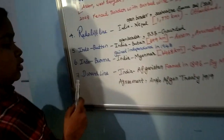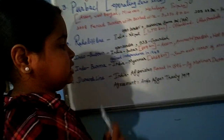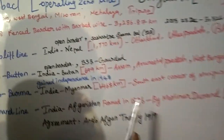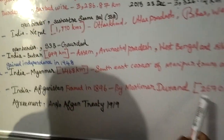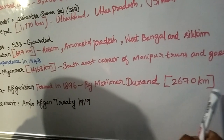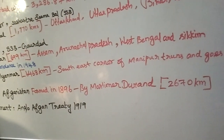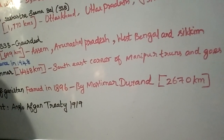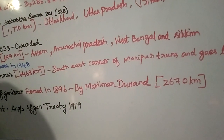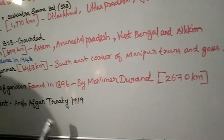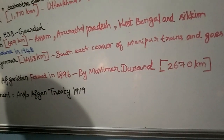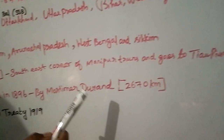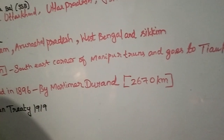Now let's learn about the Durand Line, which is the line between India and Afghanistan. It was formed in 1896 by Mortimer Durand and spans approximately 2,670 km. It was separated from India and Afghanistan due to the Anglo-Afghan Treaty of 1919. The Durand Line is named after Mortimer Durand, who was the designer of this line.